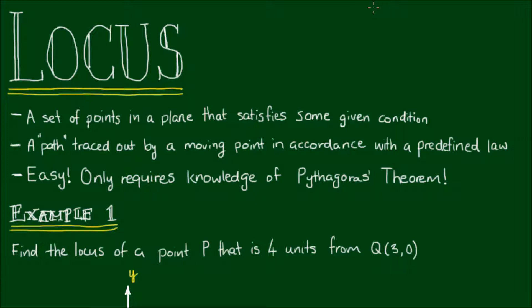So a locus is simply a set of points in a two-dimensional plane that satisfies some given condition. I like to think of it as a path that is traced out by a moving point in accordance to some predefined law. Now if that's still a mouthful, don't worry because they are easy. They only require you to know Pythagoras Theorem.